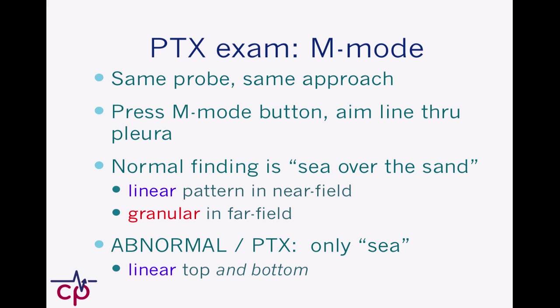In this case, a normal finding we call the seashore sign or sea over the sand. What we should see is a kind of linear artifact on the top of the screen or near field, and granularity in the bottom part of the screen or far field. The abnormal finding — the pneumothorax — it'll be linear everywhere.